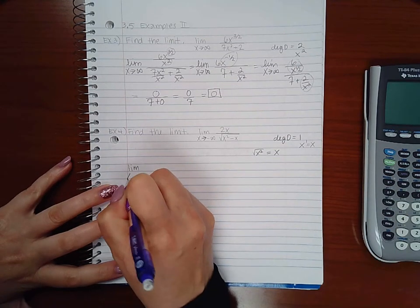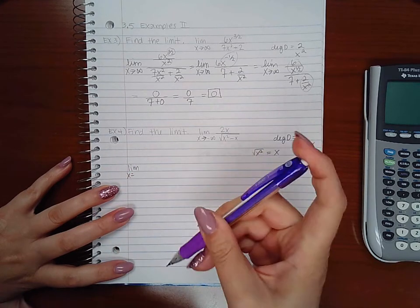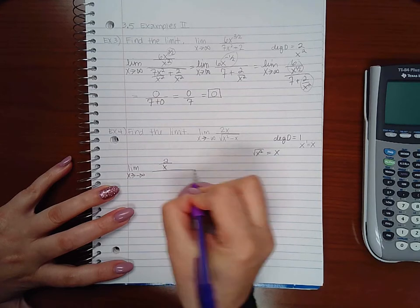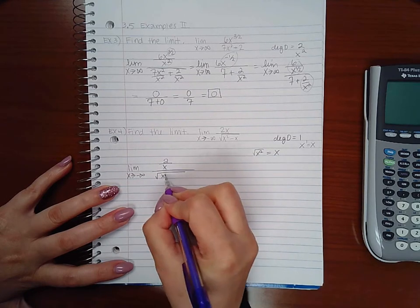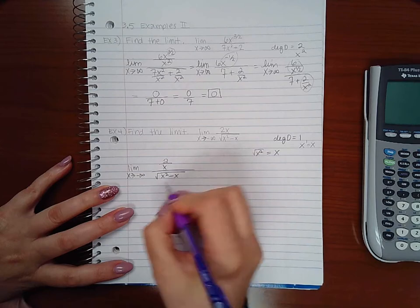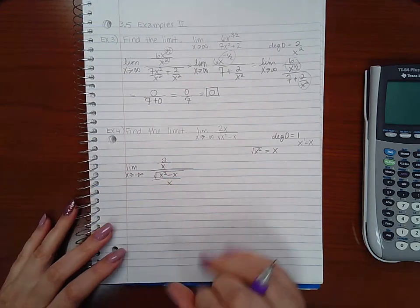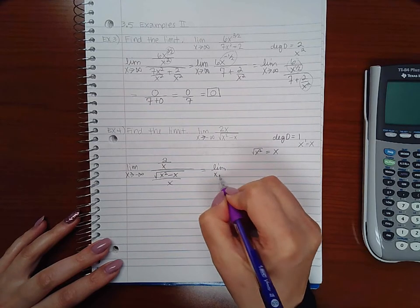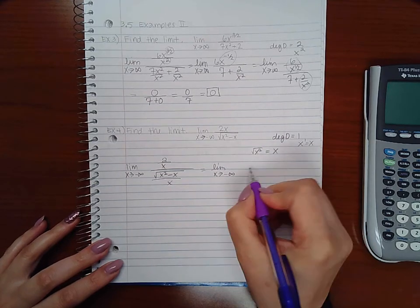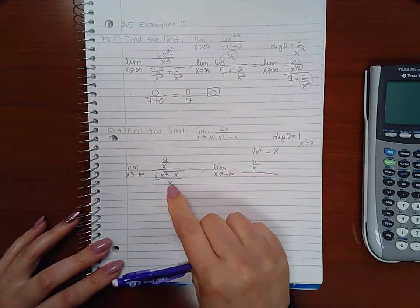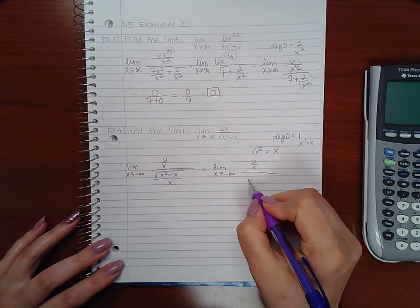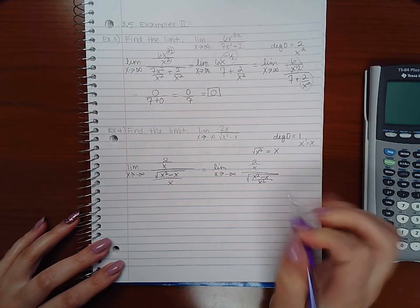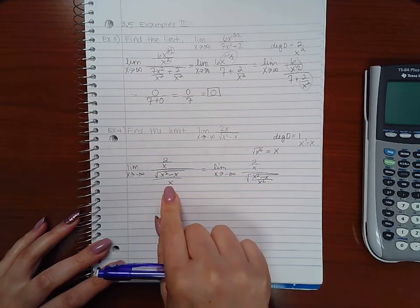So when we do that, we're going to get 2 over x, over the square root of x squared minus x over x, because that's one big fat term. Now, you can take the denominator and you can put this x inside the square root. But if you do that, it becomes x squared, because the square root of x squared is x.